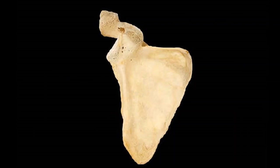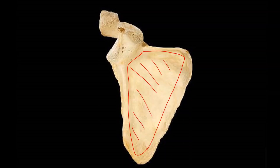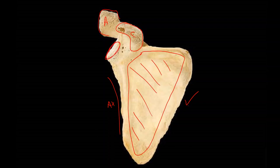Here's the scapula from the front. I can see the subscapular fossa — this big broad area on the front. I can see the vertebral border, sometimes known as the medial border, and the axillary border on this side, also known as the lateral border. Coming out the back is the acromion, and in front of the bone is this snake-head called the coracoid process. Right here is where the humerus would fit in, so that's called the glenoid cavity. You can just barely see the suprascapular notch up there.